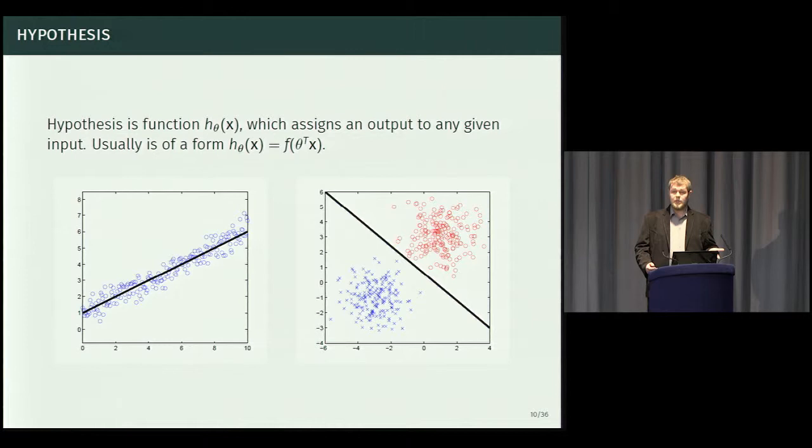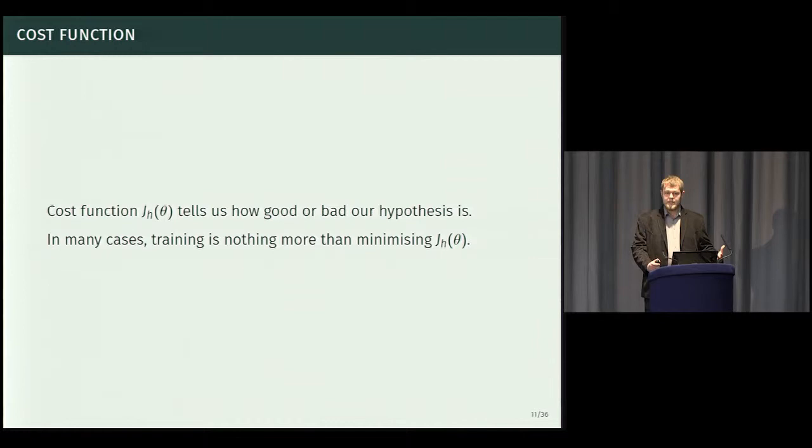So then, out of this family of hypotheses, we need to pick the best one. In order to be able to do that, we need to define what the best is. So we're going to use a cost function, which, given the set of parameters theta, the parameter vector, is going to tell us, looking at the input data, the training data, how good or bad our hypothesis is, how well it fits the data. In many cases, training is nothing more than just minimizing the value of the cost function j depending on theta. Obviously, the hypothesis and the cost function depend on the actual algorithm, so I can't give any actual examples right now. We're going to talk about them later.